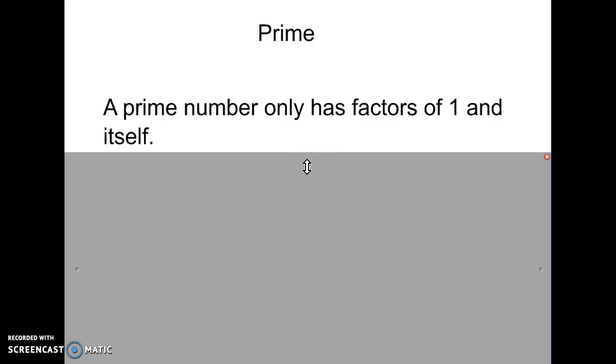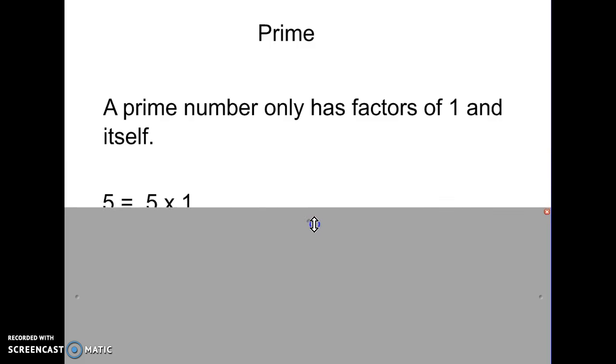Those are their only factors. So, some examples of prime numbers would be 5, because the only factors of 5 are 5 and 1. So, 1 and itself. So, it's a prime number. There's no other two whole numbers that you can multiply to get 5.